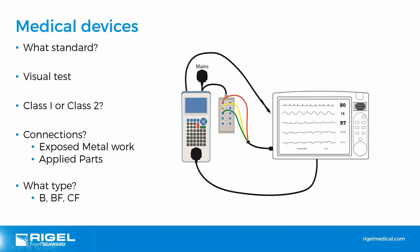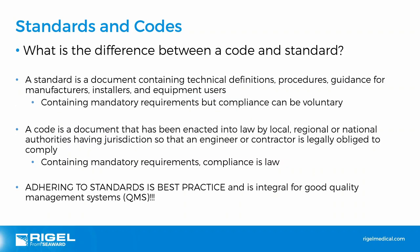When considering medical devices and safety testing, visual tests check connections and any damage, and confirm class 1, 2, or 3 classification and applied part type. Regarding standards versus codes: a standard contains technical definitions, procedures, and guidance with mandatory requirements but voluntary compliance. A code has been enacted into law by local, regional, or national authorities, meaning engineers are legally obliged to comply. Adhering to standards is best practice and integral to good quality management systems.